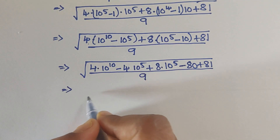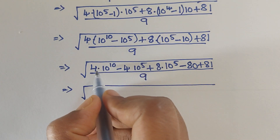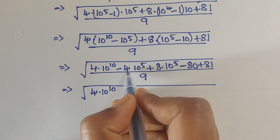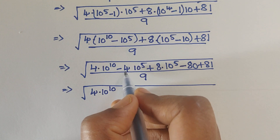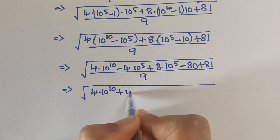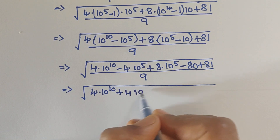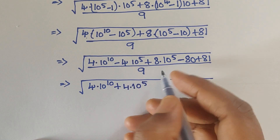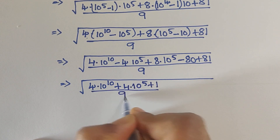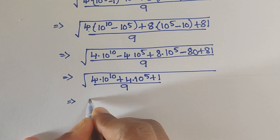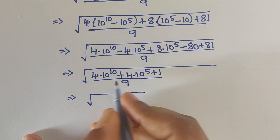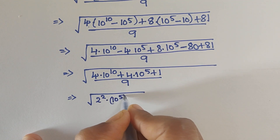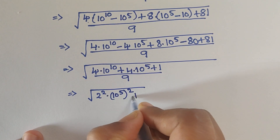So square root of — 4 times 10 to the power of 10, and here: 8 times 10 to the power of 5, minus 4 times 10 to the power of 5, which equals plus 4, so 8 minus 4 equals 4, now it becomes 4 times 10 to the power of 5, minus 80 plus 81, which equals plus 1, divided by 9.